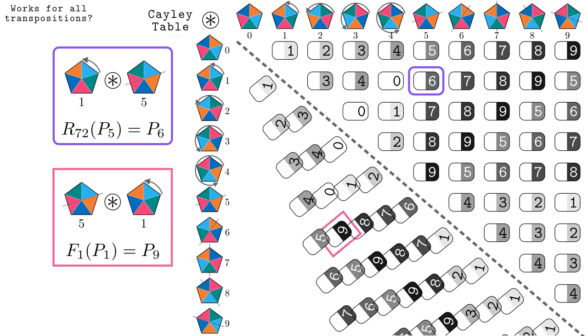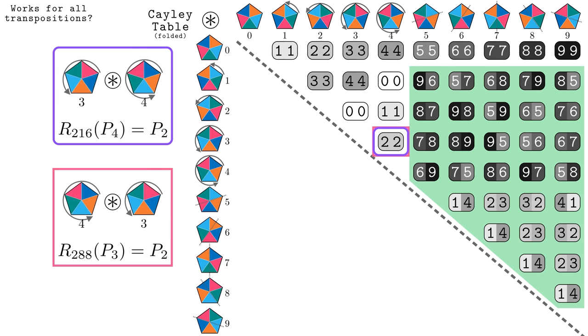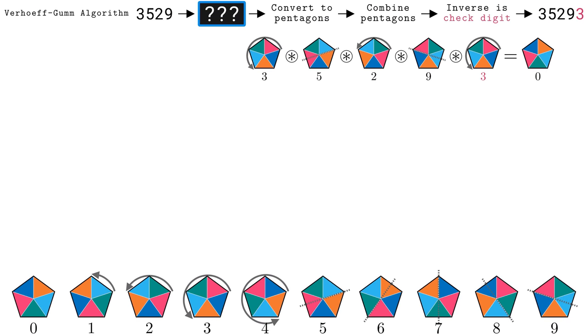Mathematicians call a grid like this a Cayley table, and this one has some neat patterns. For example, to find pentagons that are inverses, we can look for cells that have zeros. Back to the question of error detection. If we transpose any two pentagons, do we get a different answer? For example, swapping p5 and p1 takes us to this grid cell, which we can see gives us a different answer, p9. Notice the location of these cells is mirrored along the main diagonal. We can fold the entire table in half along this axis and see what happens. Most of the folded table has asymmetrical results, which means transposing the pentagons gives a different answer. That's great. However, the non-shaded area shows symmetry, which is not good.